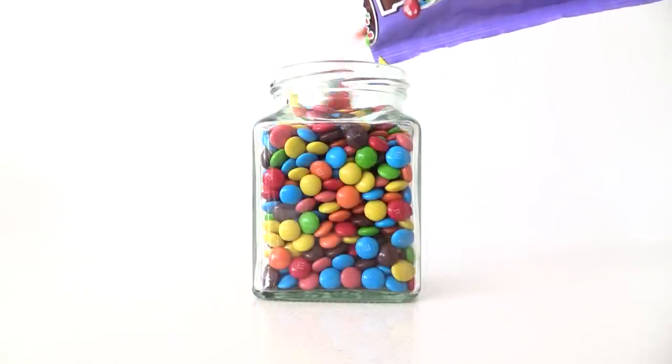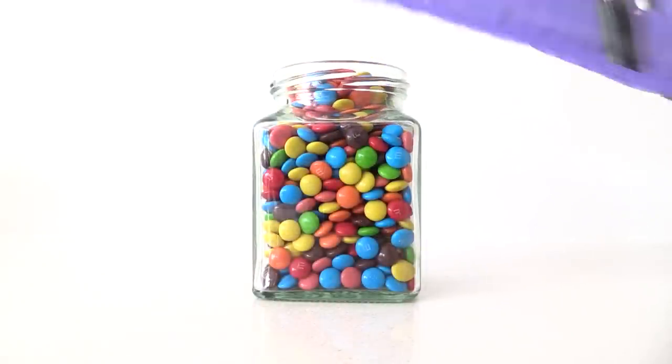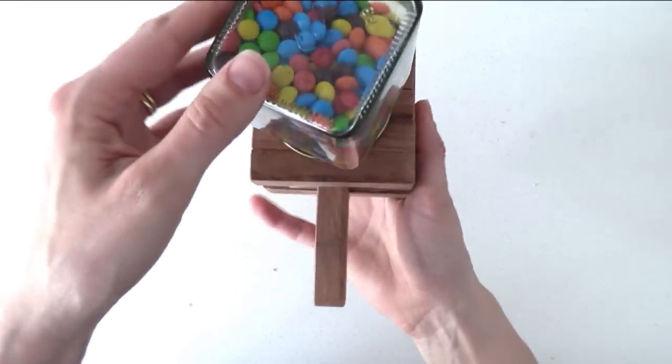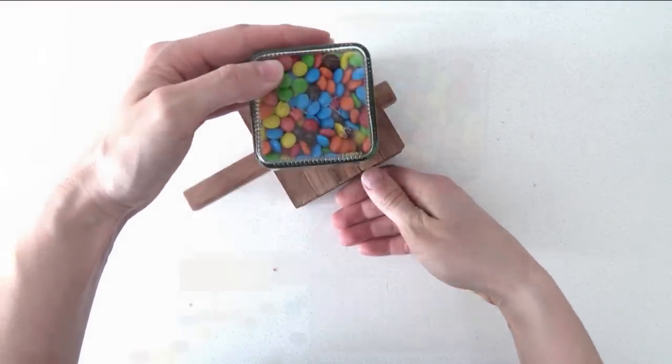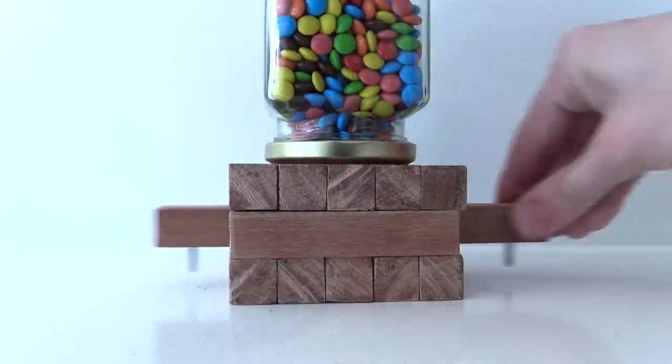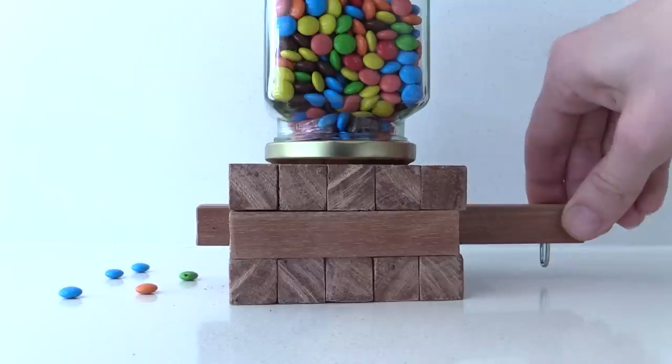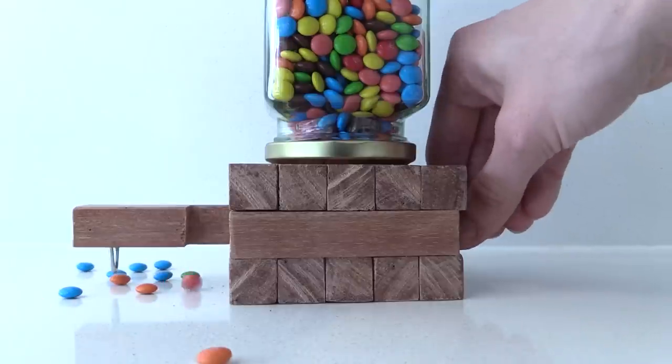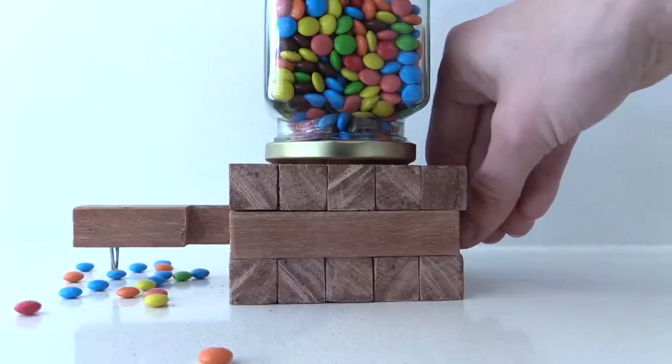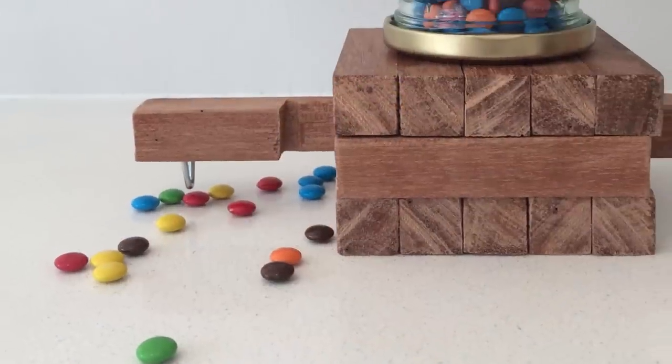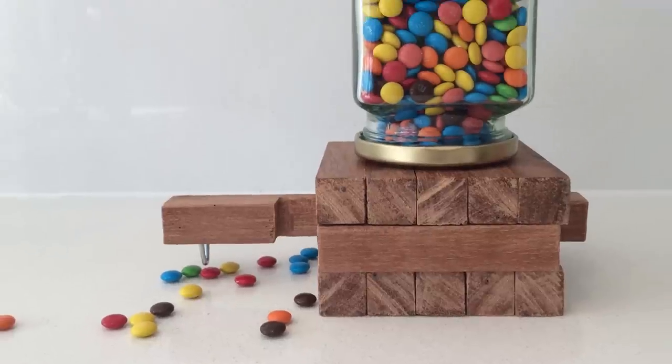Once that is dry pour M&M's into your jar, turn the wood upside down, screw it on and then flip the whole thing back the right way up. Now when you push the wood across it releases some M&M's. Pull it back so that more can fall into that hole and then push it across again. It makes a great gift and as I said it doesn't cost that much all you have paid for is one piece of wood and you have got a jar that you have repurposed.